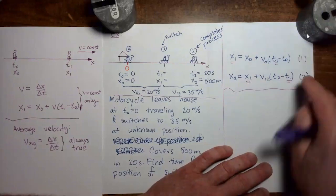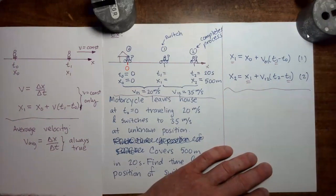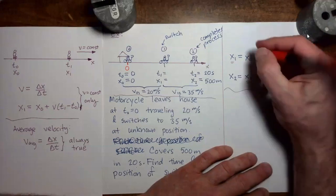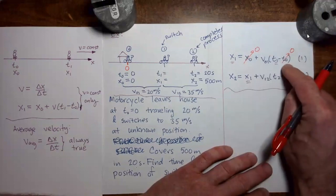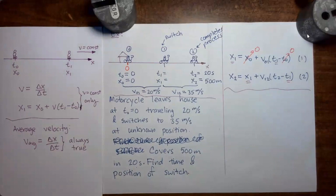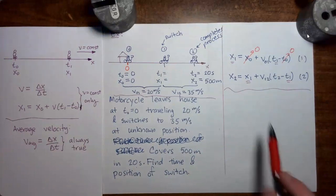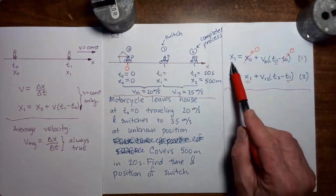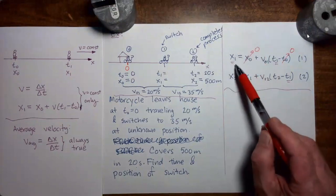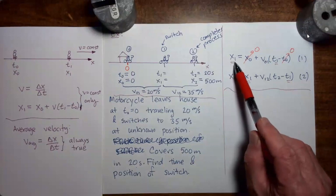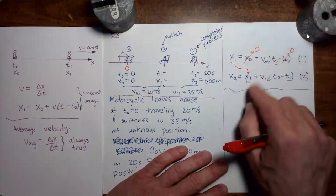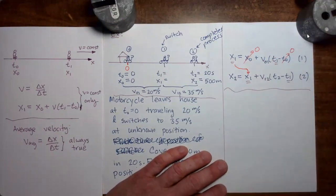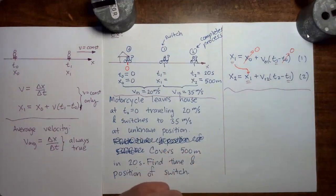Which of these two equations is simpler? In the upper equation, x0 equals zero and t0 equals zero, so those terms drop out and the equation simplifies quite a bit. In fact, x1 has already been solved for: x1 equals v01 times t1. We can take that expression and substitute it into equation two, giving us one equation with one unknown that we can then solve symbolically. Once we've solved symbolically, we put the numbers in with units at the last step.